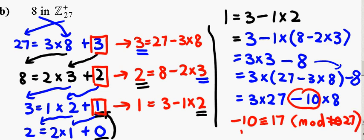So, hence, 17 is the multiplicative inverse of 8 in Z27.